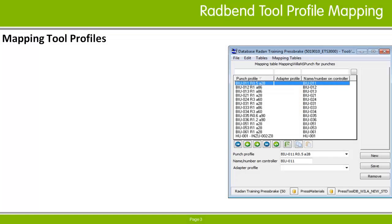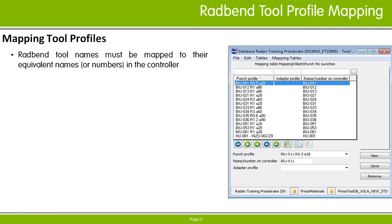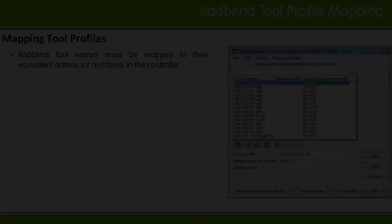Punch and die profiles are defined by a name or number in the controller. In order to get the correct punch or die to output to any NC code, and the correct punch or die properties used in any calculations, the Radband tool profile names must be mapped to their equivalent definitions in the controller. This is done in mapping tables.